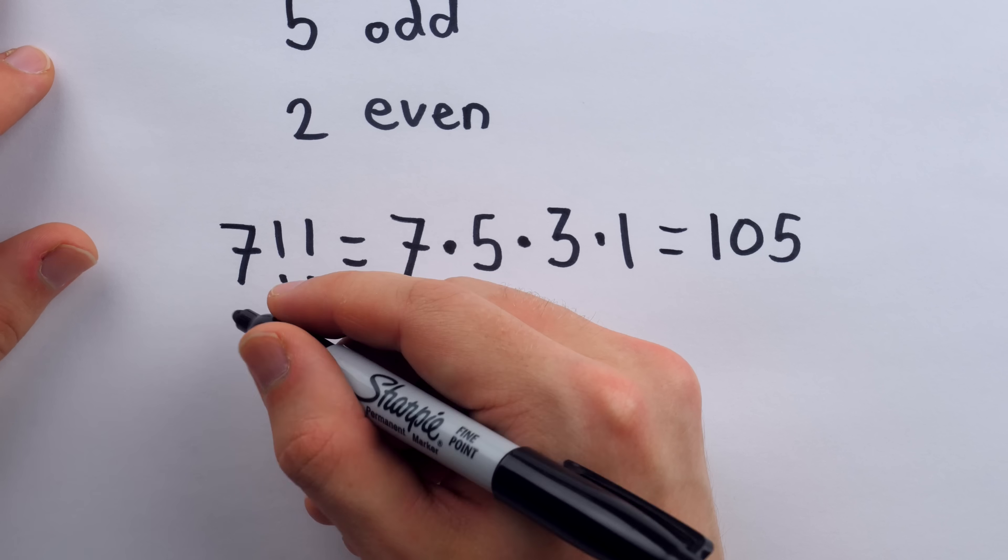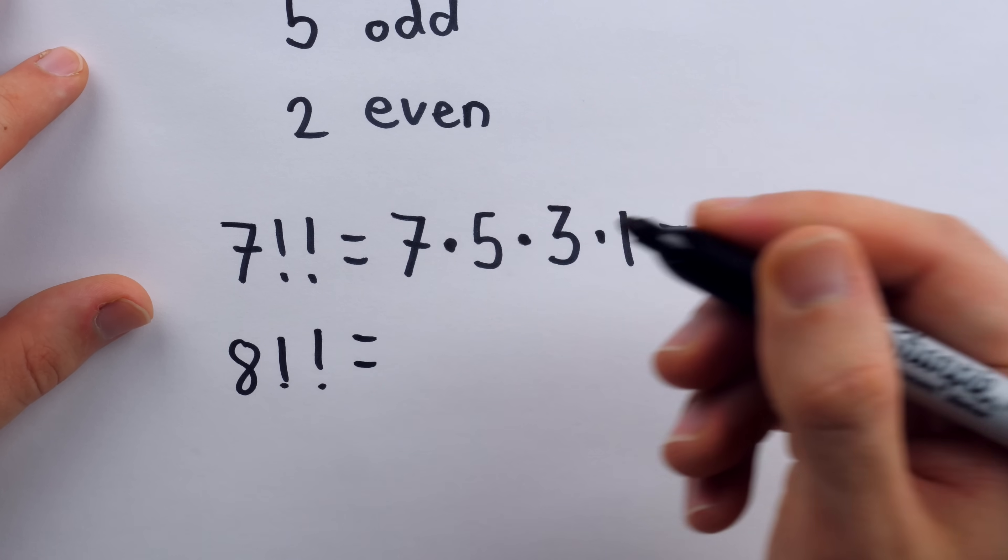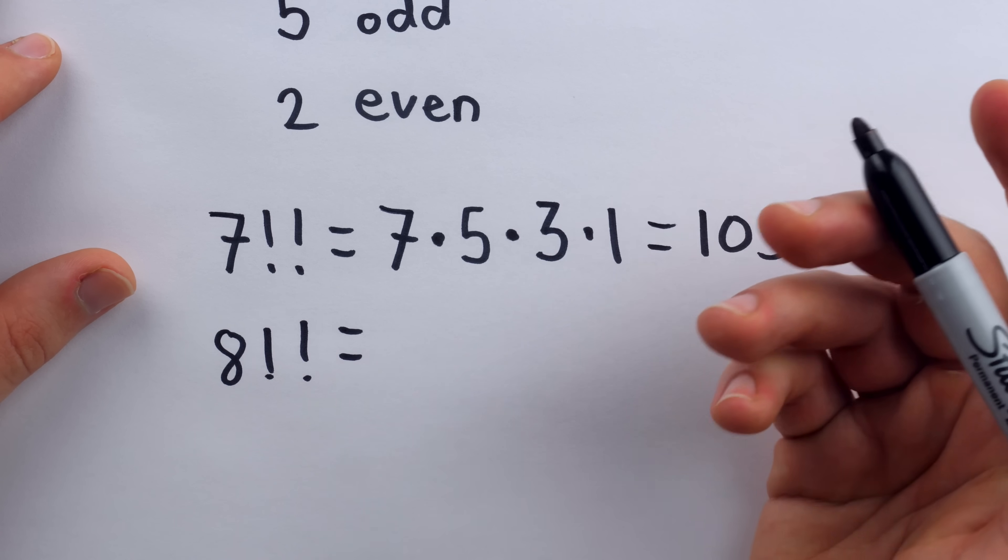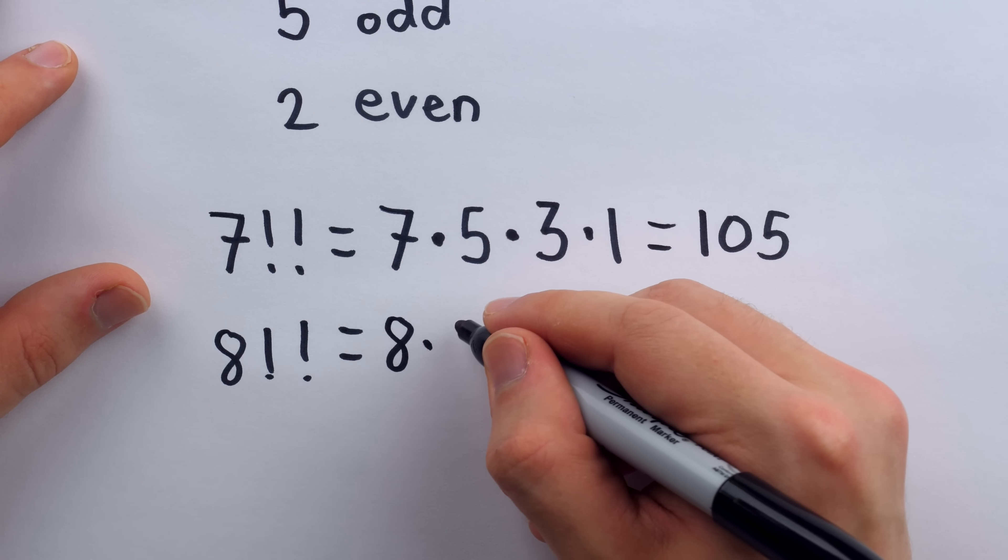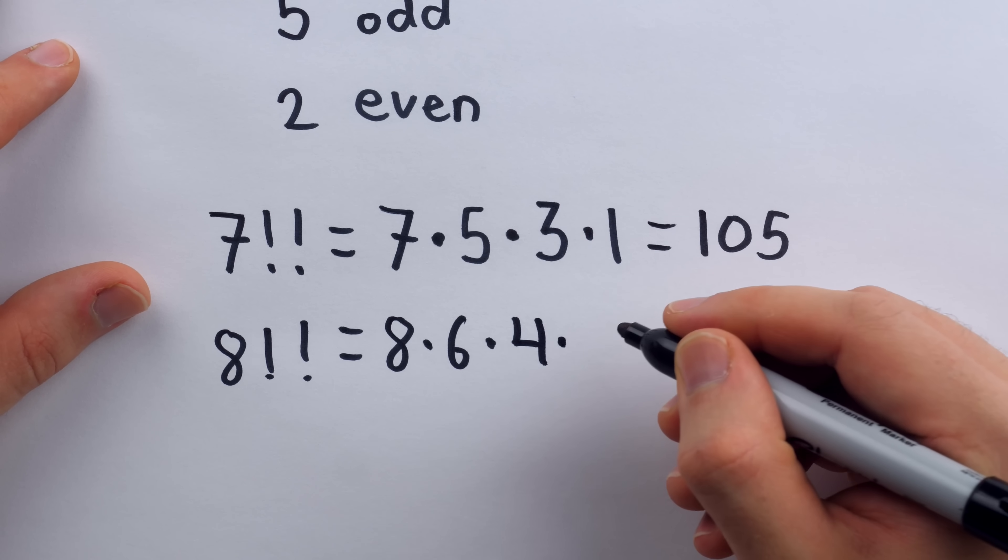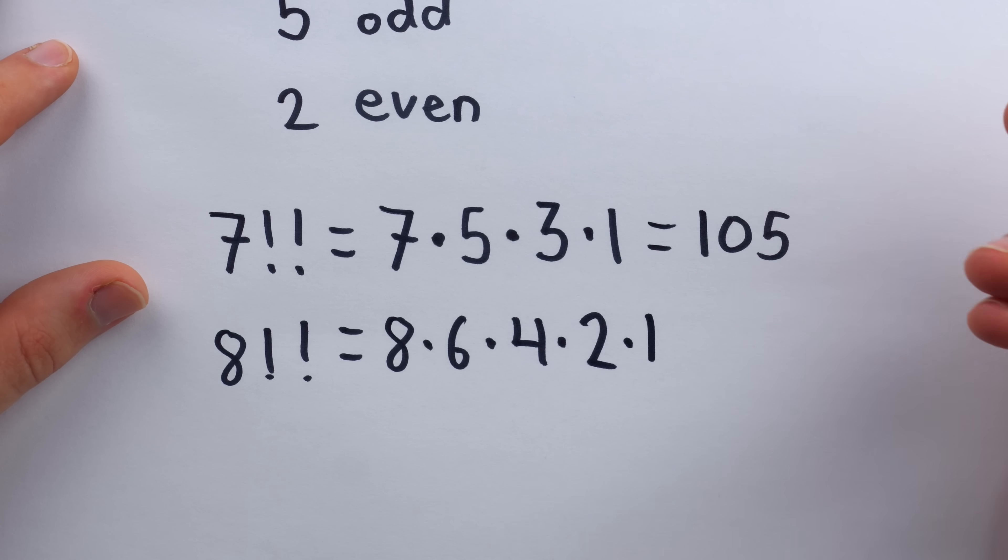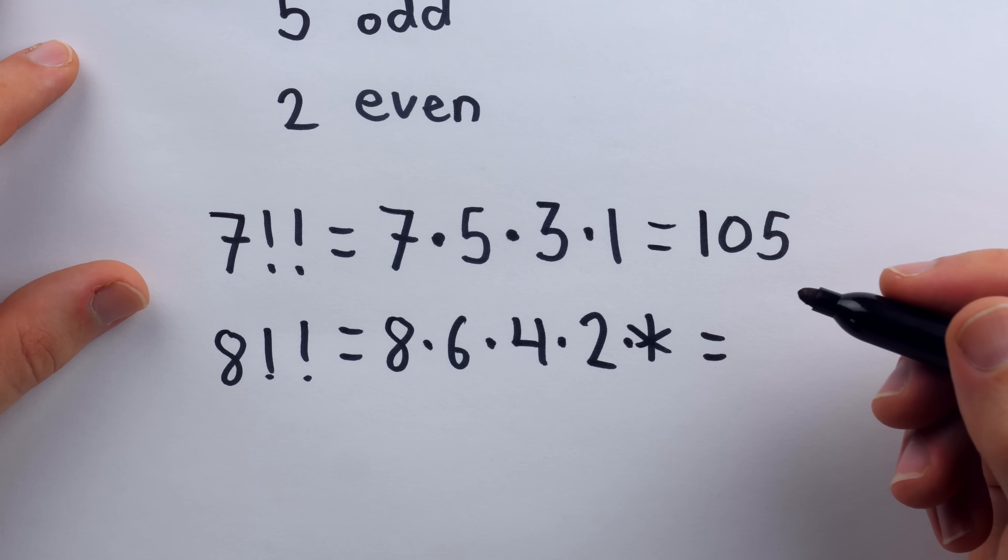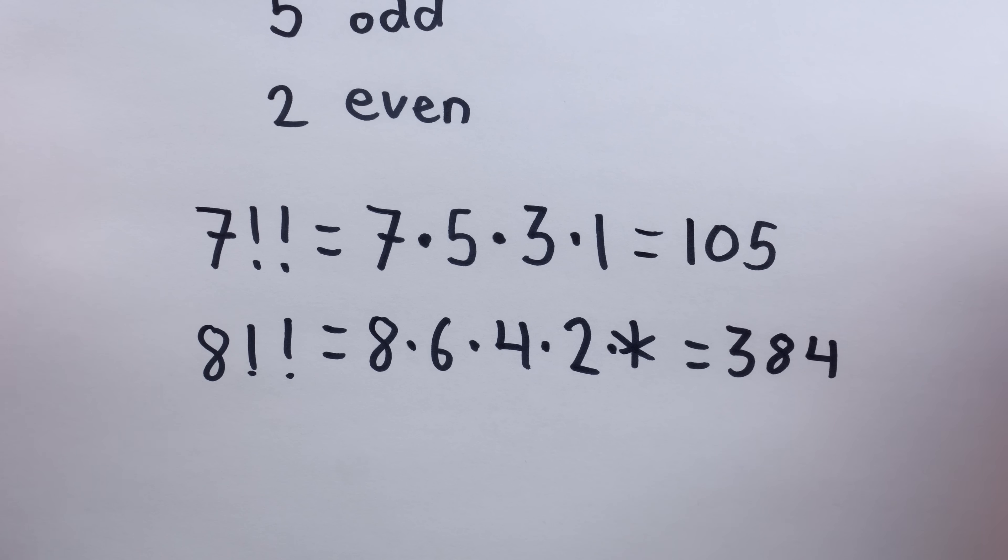So then you can probably guess what, for example, 8 double factorial would be. Same idea, except this time we're going to skip the odds, because 8 itself is an even number. So we would have 8 times skip 7 because 7 is odd, 6 times skip 5 because 5 is odd, 4 times skip 3 because 3 is odd, times 2. And we actually just stop there. Of course, you could include the times 1 if you want, but it doesn't make any difference. And this happens to equal 384, I believe. Although, let me double check. Yes, that's correct.